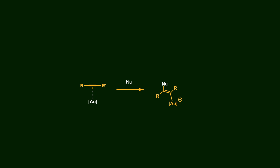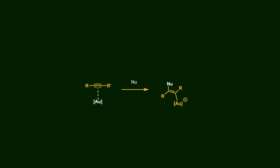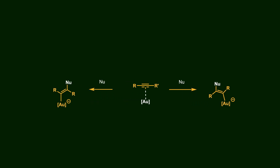The most important feature of gold in organic synthesis is its ability to coordinate with pi bonds, especially alkyne functional groups, activating them and setting the stage for construction of more complex scaffolds through nucleophilic attack. However, when an internal unsymmetrical alkyne is employed, the nucleophile can attack either of the two carbon atoms, making selectivity a crucial challenge.